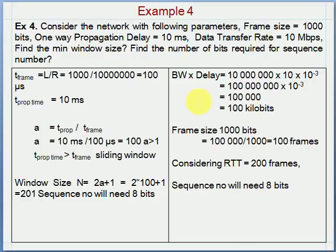Using bandwidth-delay product we get 200 frames; using 2A plus 1 we get 201 frames. To satisfy the requirement that window size should be greater than 2A plus 1, the answer should be 202 frames.